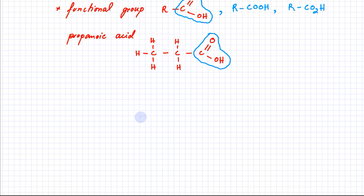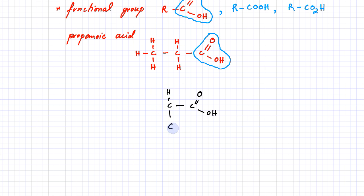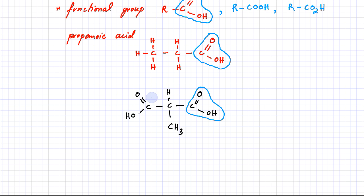Let's draw a more complicated carboxylic acid. We have a carbon atom with a carboxylic acid functional group to the right, a CH₃ branch, and then another carboxylic acid functional group to the left. This molecule has two carboxylic acid functional groups — one to the right and one to the left. You can have many complicated molecules with more than one carboxylic acid functional group.